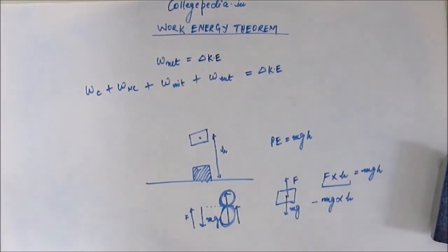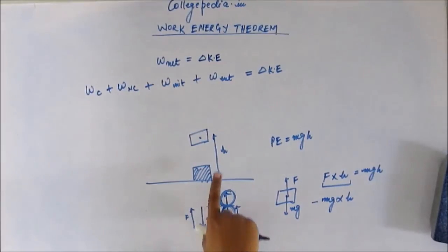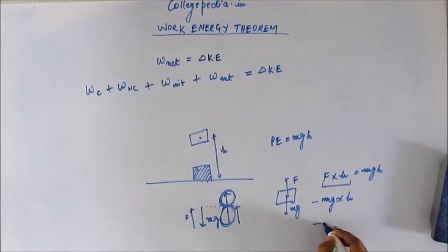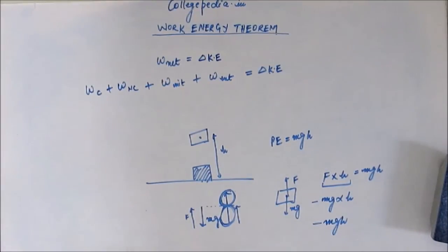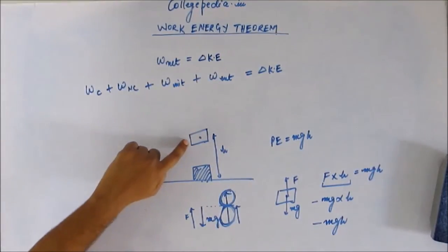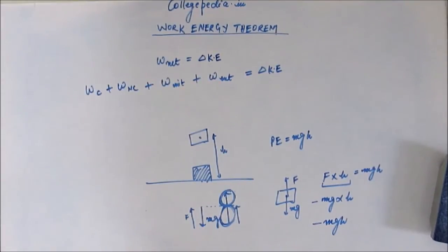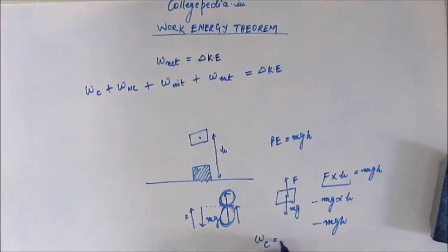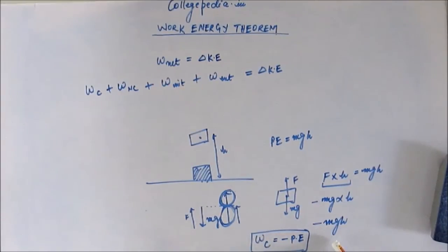We'll note one more thing here for use in the next topic. The work done by the conservative force — the earth in this case — was minus Mgh, while the potential energy gained by the block was Mgh. So the relation is: work done by the conservative force equals the negative of the potential energy acquired. Work done by conservative force here is minus Mgh; the negative of that is Mgh, which is the potential energy acquired.